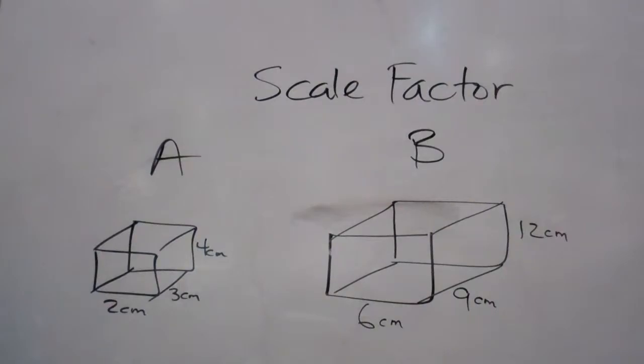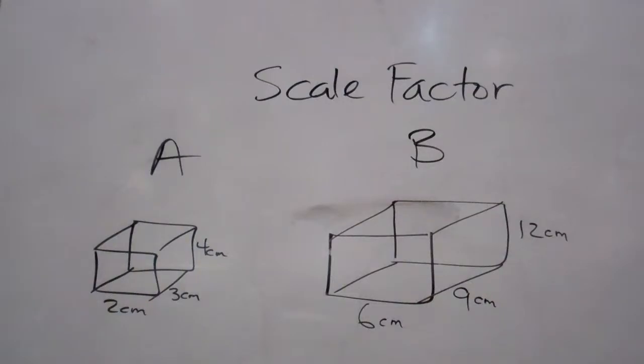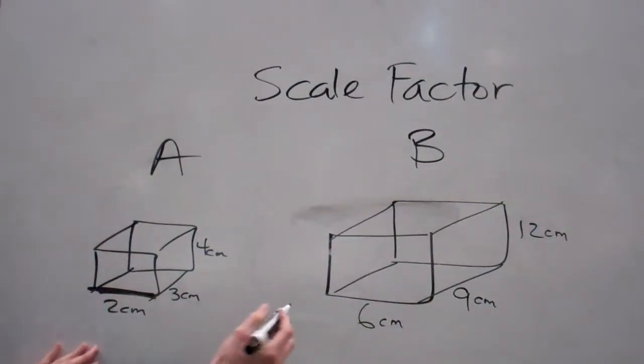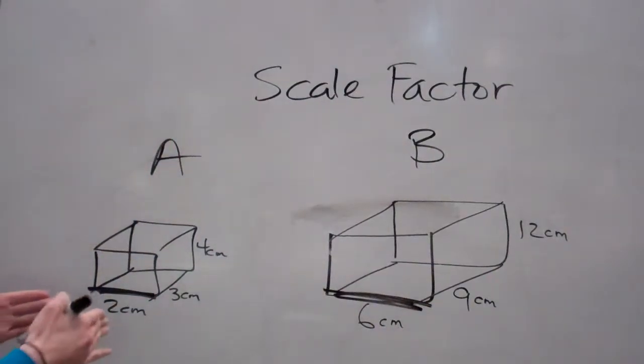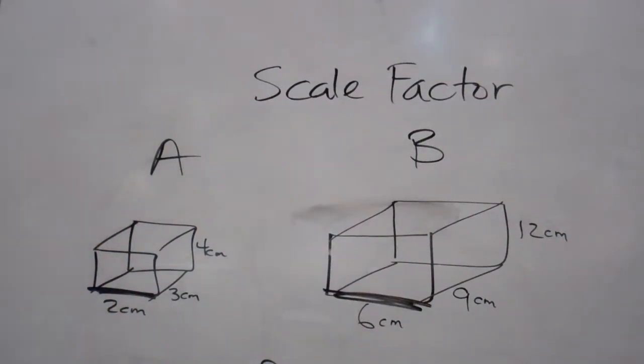Now, what we're going to do is we're trying to figure out the scale factor. Remember what the scale factor is? I'm asking myself, how much larger is this one than this one? So, I'm going to take two centimeters. This is my corresponding side with my corresponding side. To get from two centimeters to six centimeters, what did I do? I multiply by three. So, the scale factor for this to this is three.